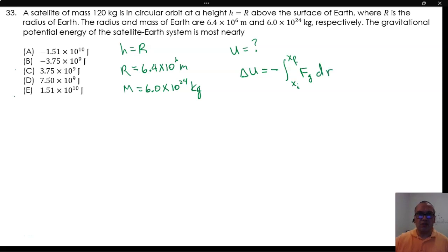We set the initial value of energy to be zero when the distance is positive infinity. Then, the potential energy is going to be negative GMm over r evaluated from infinity to twice r.